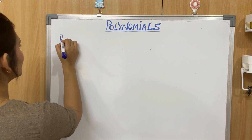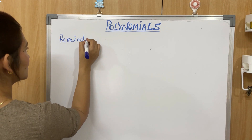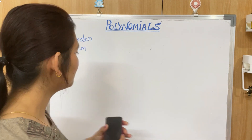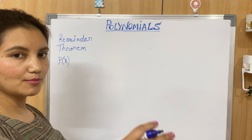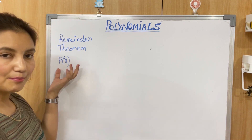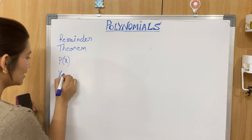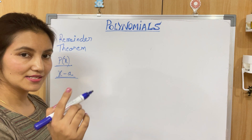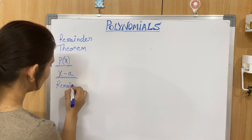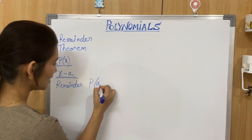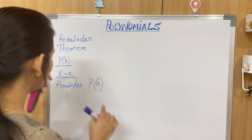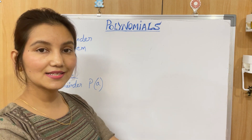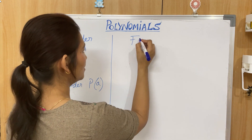Let's revise Remainder Theorem. Remainder Theorem says that if a polynomial p(x) — of degree 1 or greater — is divided by a linear polynomial (x − a), then the remainder will be p(a). So if p(x) is divided by (x − a), the remainder will be p(a).